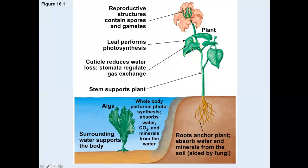Plants have specialized structures just for photosynthesis. Leaves are broad and flat to allow more surface area to contact the sun for photosynthesis. Plants also have specialized reproductive structures such as flowers, with specialized areas modified to help the flower reproduce.